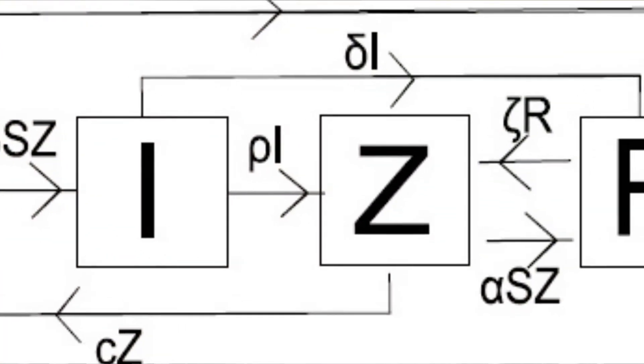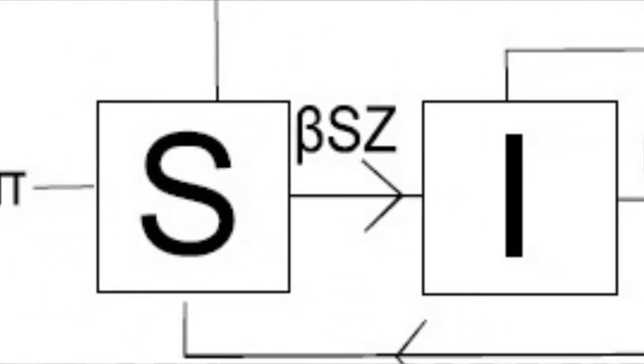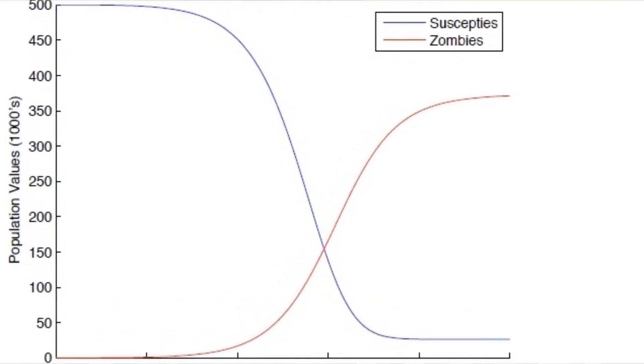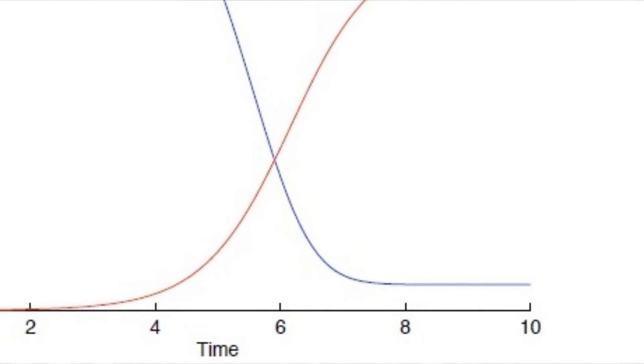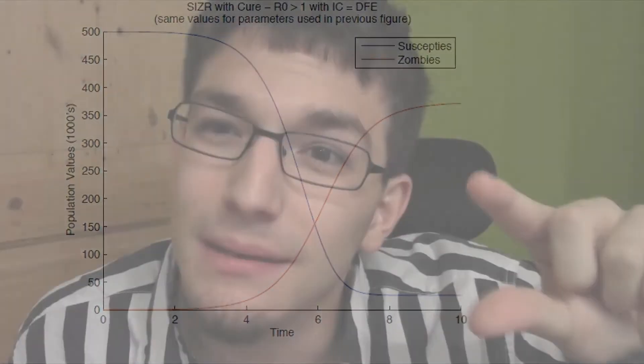Im letzten Modell assoziieren wir eine Treatment-Methode — ein Gegenmittel gegen den Zombie-Virus. Von der Gruppe Z können Zombies über einen Parameter wieder zurück in die Opfergruppe, also zu lebenden Menschen, zurückkehren. Zum ersten Mal können damit — wie in der Grafik sichtbar — ein kleiner Teil der Menschen überleben. Die Zombies übernehmen zwar weiterhin die Überhand, aber immer eine konstante Rate an Menschen überlebt, die natürlich viel niedriger als die Zombie-Anzahl ist.